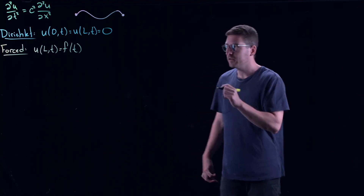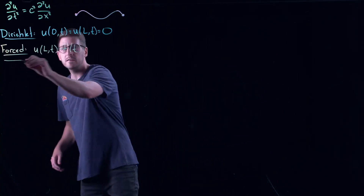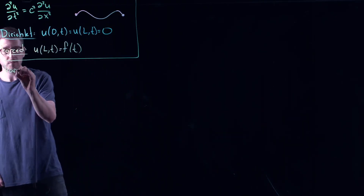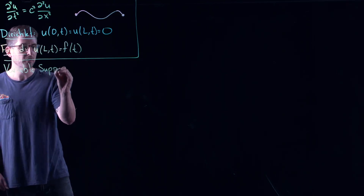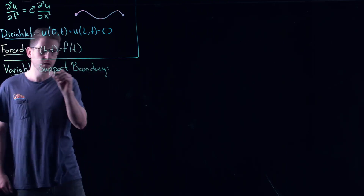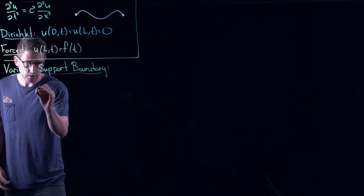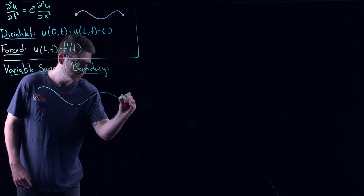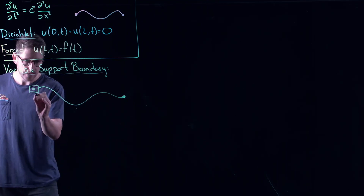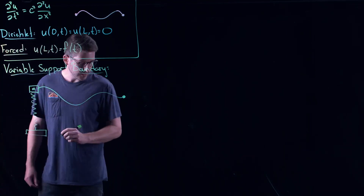I want to give you another type of boundary condition that makes things more interesting, coming from an application of mechanics. This is called a variable support boundary. We're going to think about creating a mechanical system. Here's what I want to do — I'm just going to do this on one end. Here's my string: one end is doing whatever it wants, but on this other end it's attached to a mass.